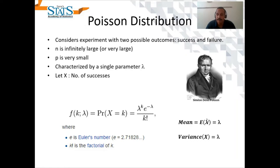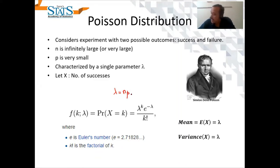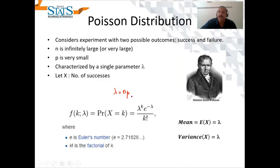Lambda is basically N multiplied by P. Some numerical problems related to binomial distribution in which N is very, very large and P is very, very small can also be solved with Poisson distribution functions.